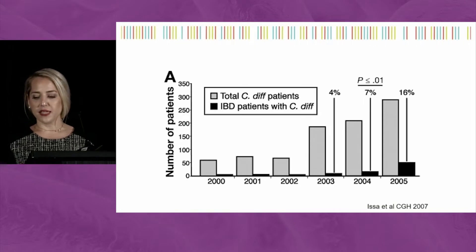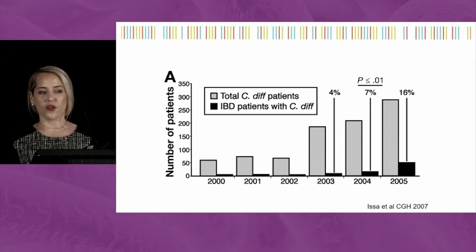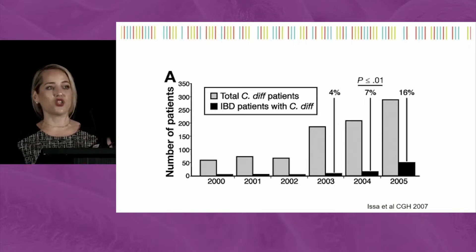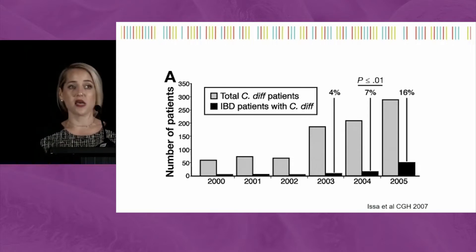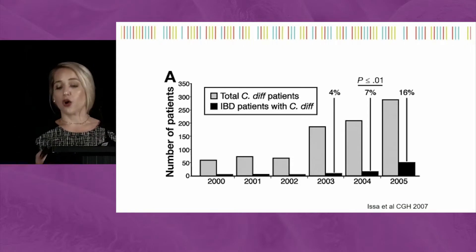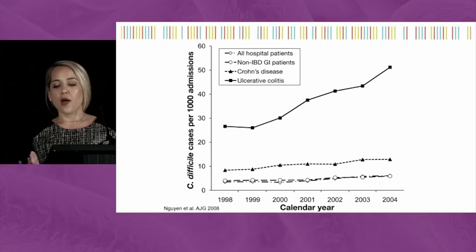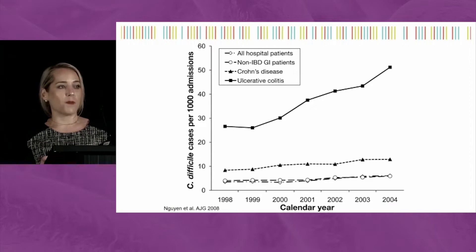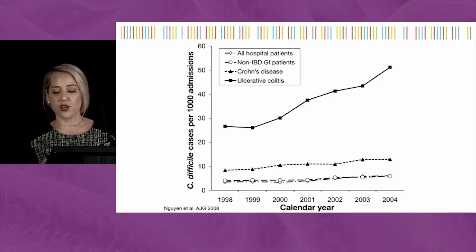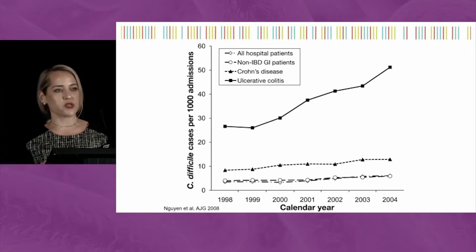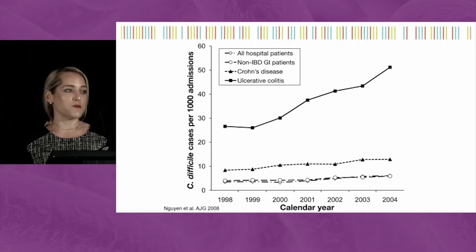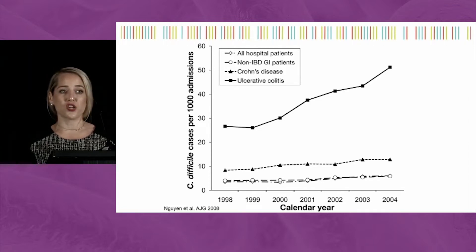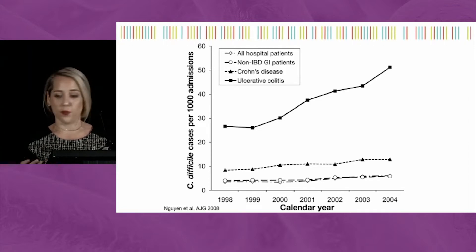This is an older study, but it really helps illustrate that while there is an exponential rise in C. diff overall, we are still seeing an exponential rise among our IBD patients as well. When you break it down by disease phenotype, it's really our ulcerative colitis patients driving this, although our Crohn's patients—specifically Crohn's colitis patients—are certainly not immune.